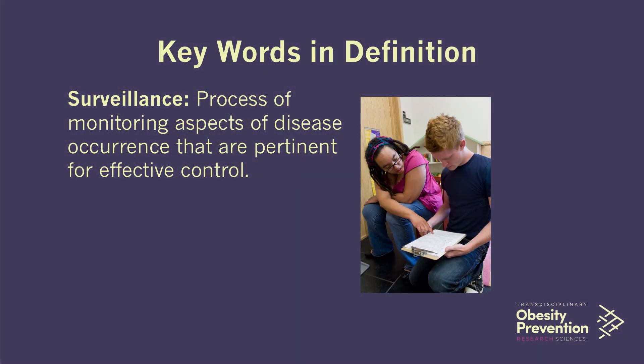Then we want to know, if we have a sense of the patterns of the disease and what factors are contributing to that disease, we want to make sure that we're tracking that over time. This is where surveillance comes into play. I'll show you some statistics generated from the Centers for Disease Control, our primary public health organization in the U.S., where they take surveys of the population over time. If we know that people can be more physically active, are we finding that increasing physical activity levels have an impact on decreasing the number of individuals who have obesity?